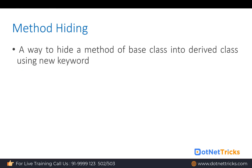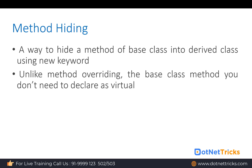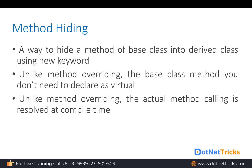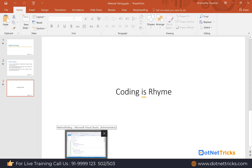Now we have one more concept — method hiding. Method hiding is a way to hide the base class method in the derived class using the new keyword. Unlike method overriding, the base class method does not need to be declared as virtual. Also unlike method overriding, the actual method call is resolved at compile time, not runtime.